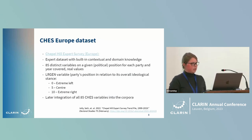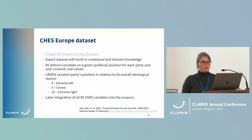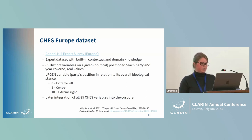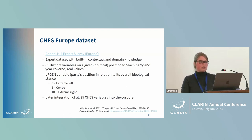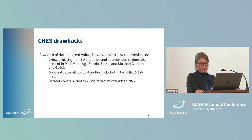The CHES Europe dataset is an expert dataset with built-in contextual domain knowledge, and each individual political party has been evaluated by at least four political scientists. It includes 85 distinct variables on a given political position for each individual party. For political orientation, we first looked at the LRGEN variable, which emphasizes the party's overall ideological stance on a scale from 0 to 10, with 5 denoting the center. We later decided to also add all 85 CHES variables into our corpora given the wealth of information they provide.